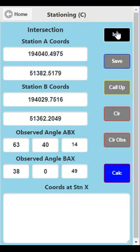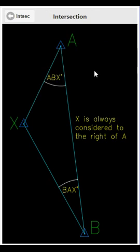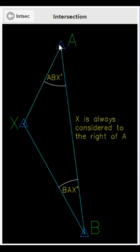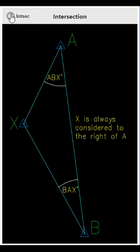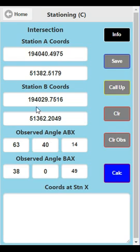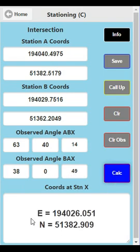Now we go to Intersection. This is a little different: instead of setting up at point X, we have two coordinated stations A and B. We set up at point A, back sight B, and observe angle ABX. Then we swap over to B, back sight A, and observe angle BAX. Again, you'd use three rounds of angles. Once we have these two angles, we can find the coordinates at point X. Enter station A coordinates, station B coordinates, observed angle ABX, and observed angle BAX. Press Calc and there are your coordinates.